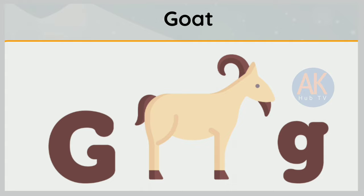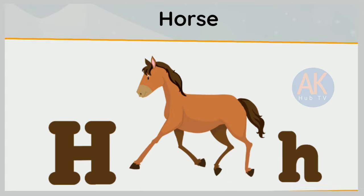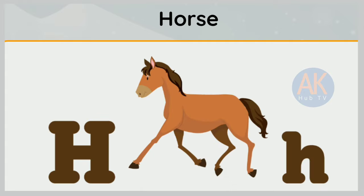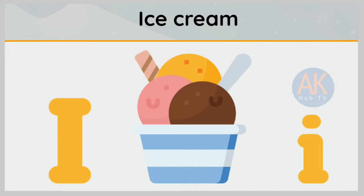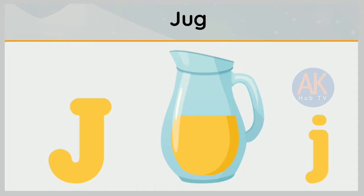G is for goat. G, g, goat. H is for horse. H, h, horse. I is for ice cream. I, ice cream.